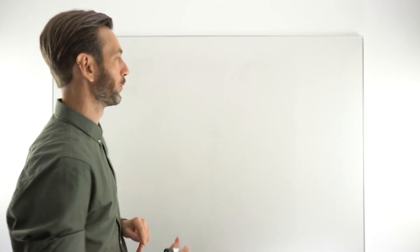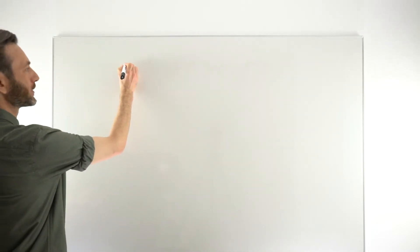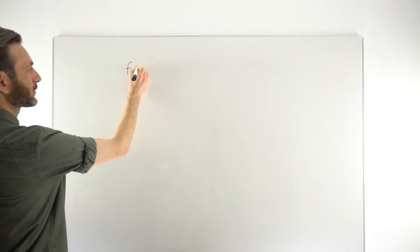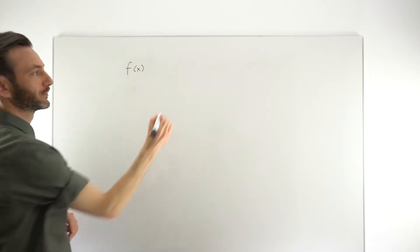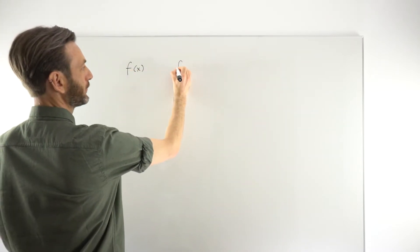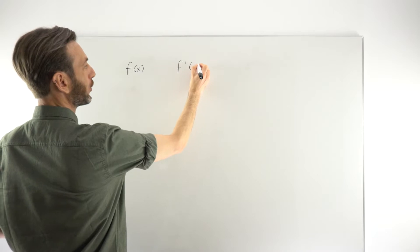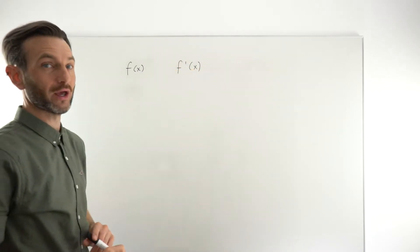In this class, we're going to consider the notations we use to represent the derivative. So it's fairly straightforward. Basically, if a function is given to you as f of x, then we represent the derivative using the notation f prime of x, or sometimes this is called f dash x.